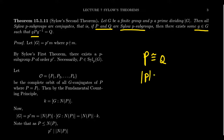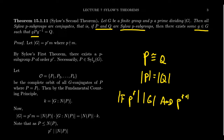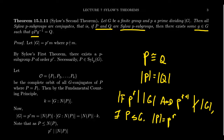This implies that all of the Sylow P subgroups have the same order, because the order of one will be the order of the other — the order of P equals the order of Q. Now, if P to the R divides the order of G and P to the R+1 does not divide the order of G, the Sylow first theorem guarantees there exists a subgroup of order P to the R, and it has to be a Sylow subgroup because it's maximal. Therefore, every Sylow P subgroup has order P to the R.